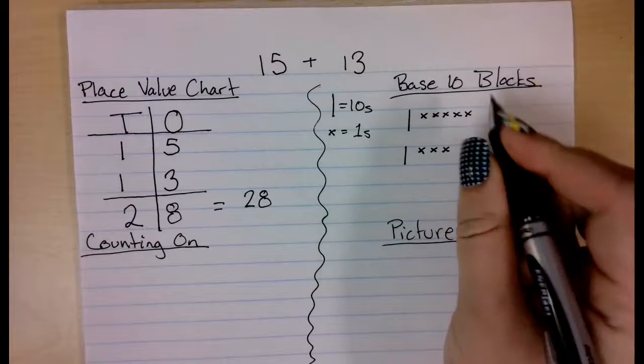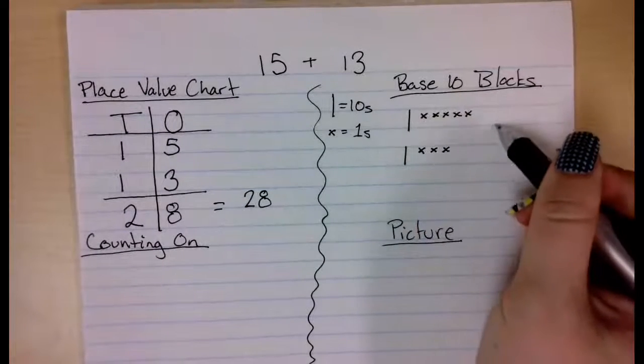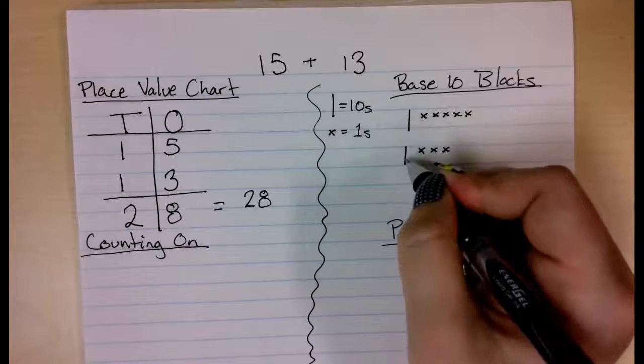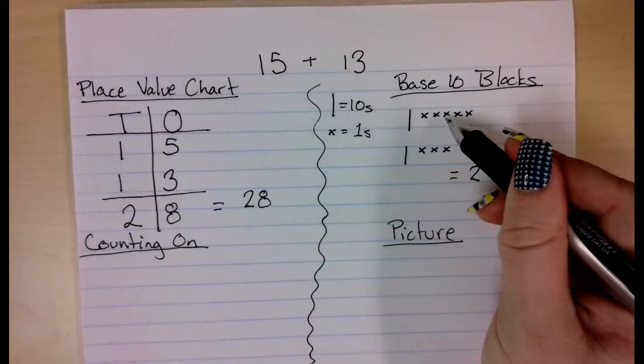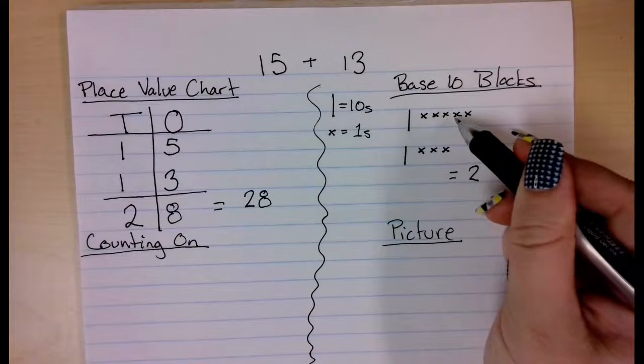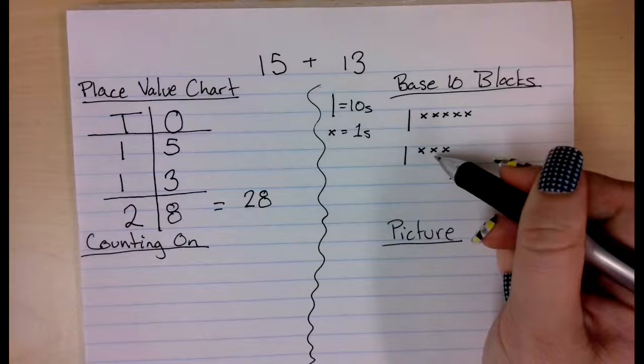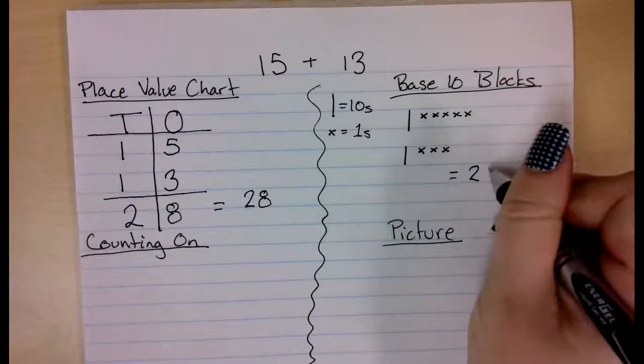And when I add them all up together, I have two 10s, and I have 1, 2, 3, 4, 5, 6, 7, 8 ones. And I have 28.